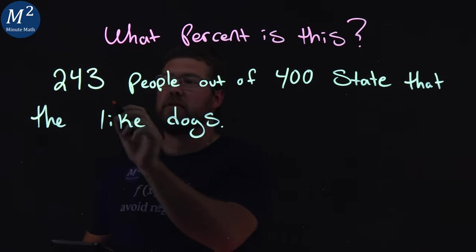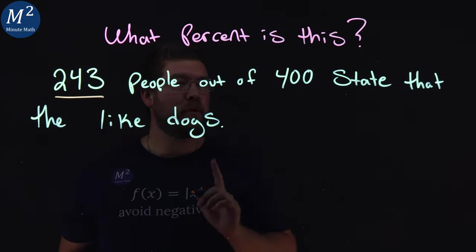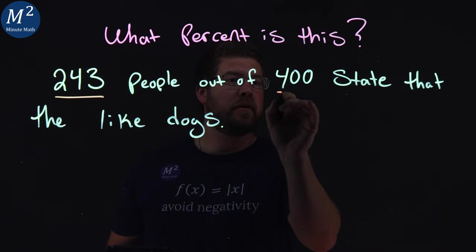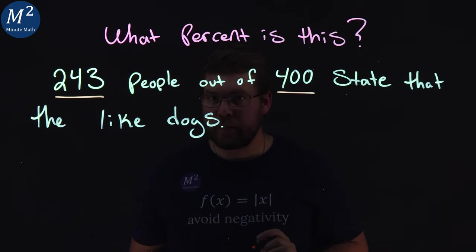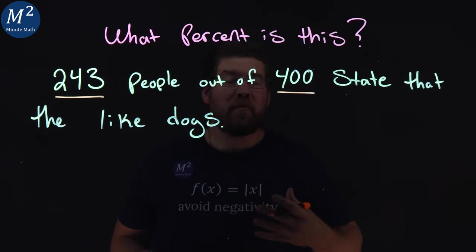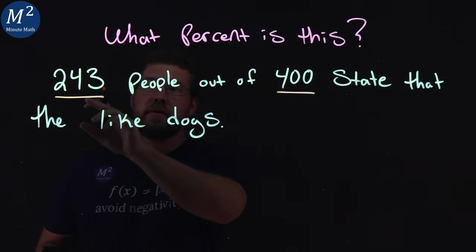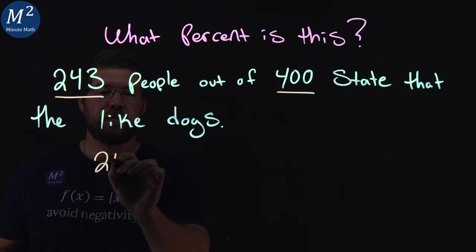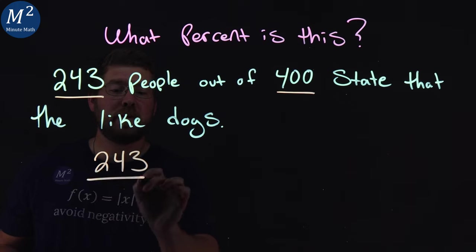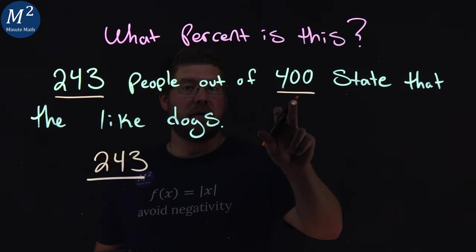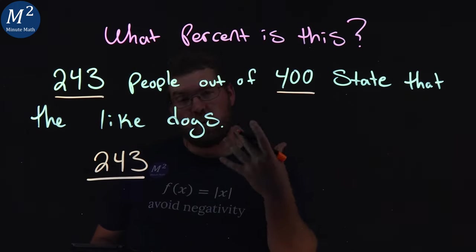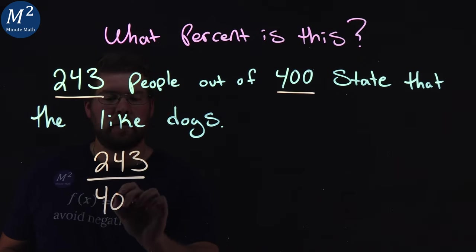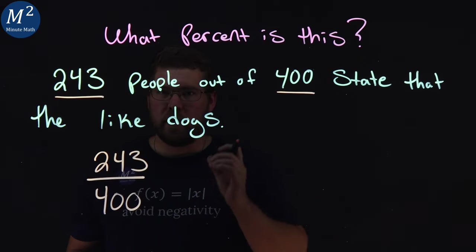The key parts here is the 243 people out of the 400. So to solve what percent this is, we take the part 243 and put it over the total amount out of 400. So 400 is a total, and we have 243 out of that.